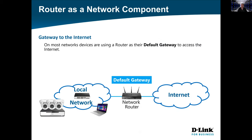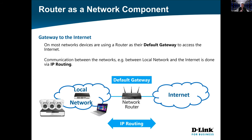Your router is your network core. In most networks, routers are the default gateway for accessing the internet. On the router there are separate interfaces — a LAN interface and a WAN interface. You can't have the same subnets on both interfaces, so you need to route between them to allow traffic to flow. The communication between your local network and the internet is done by IP routing; different subnets need to be routed via IP address.